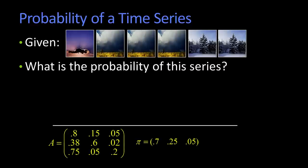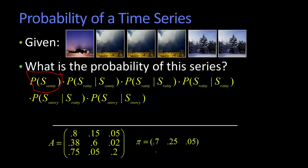It's just the probability that I start out sunny, that's here, times the probability that it becomes rainy given that it's sunny. So that would be here, times the probability of rainy given rainy, which is there. All the way through, I just have to chain it through, right?